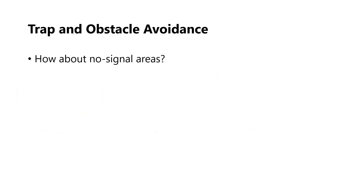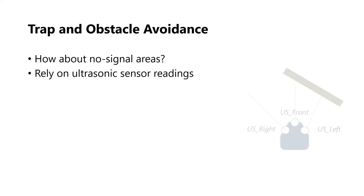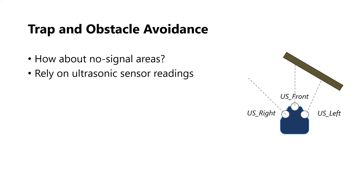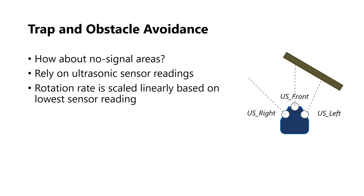However, when the robot enters no-signal areas, we can only rely on ultrasonic sensor readings. The rotation rate is scaled linearly based on the lower sensor reading, and the direction is to the side with more space, i.e. where the reading is higher. In the illustration shown, the robot would rotate right.